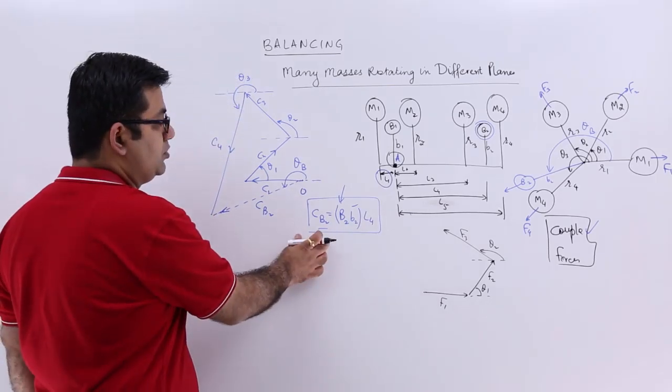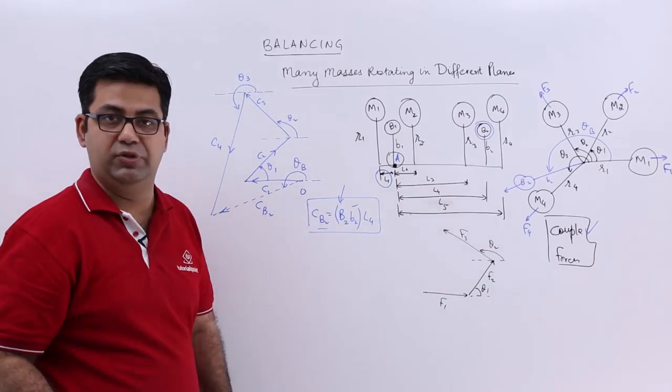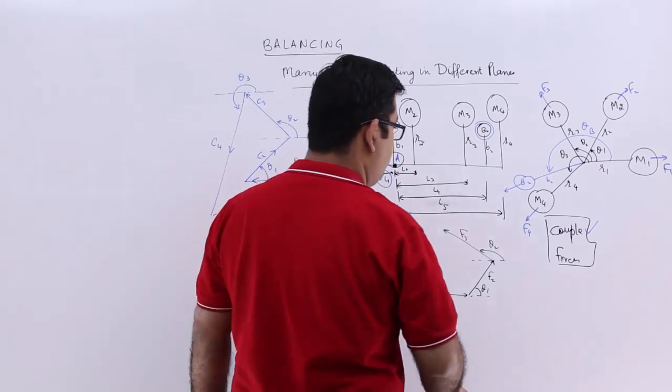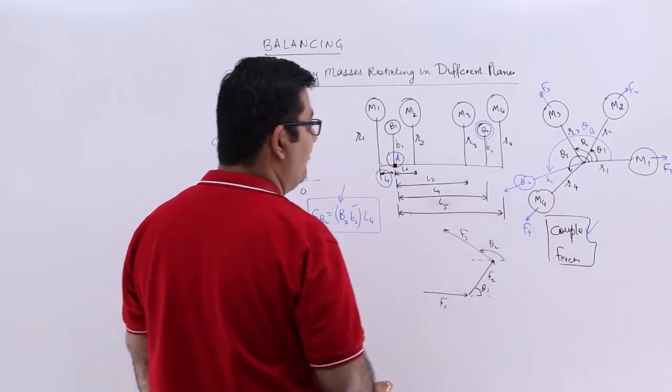So for a couple, you choose a scale. For a force diagram also, you have to choose a scale. Then we draw this F4.